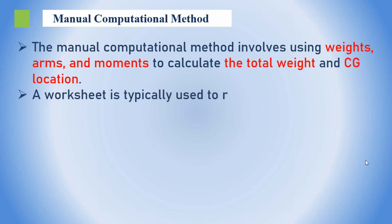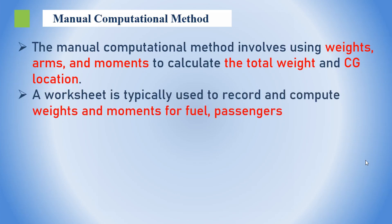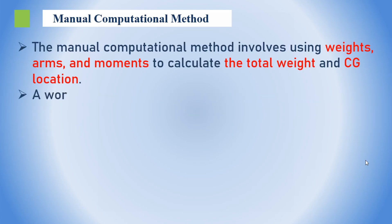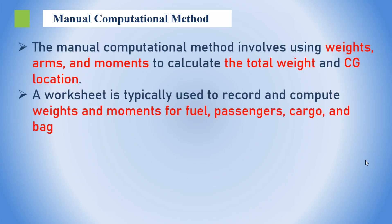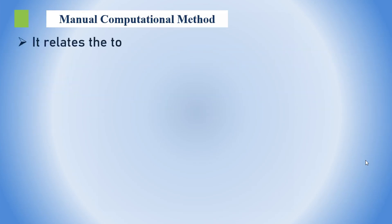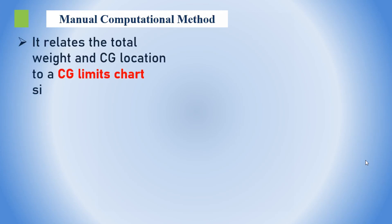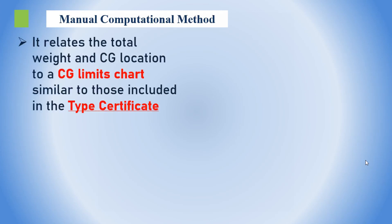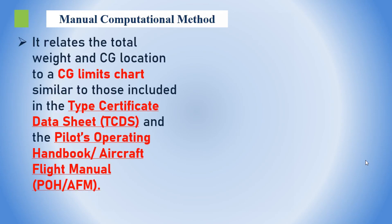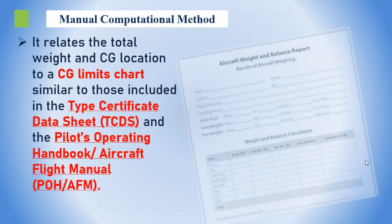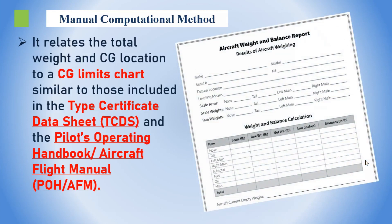To make things easier, we often use a worksheet. This worksheet helps us organize all the pertinent data, including the weight and CG of passengers, fuel, and baggage. When planning a flight, we fill in the blanks on the worksheet with specific data for that particular journey, ensuring a clear picture of the aircraft's weight and balance before takeoff.